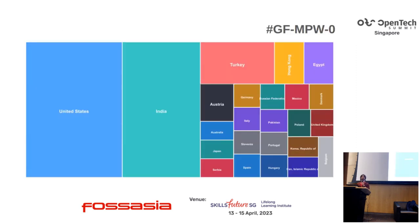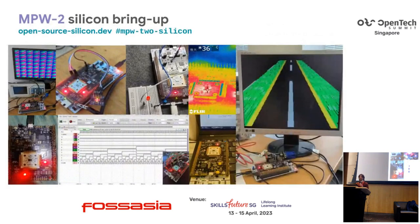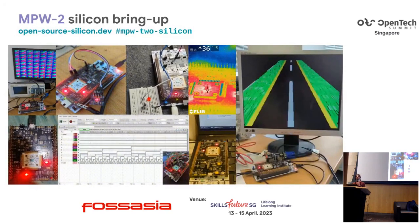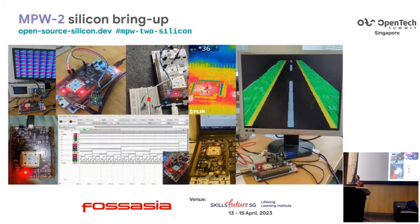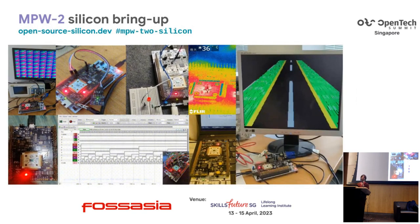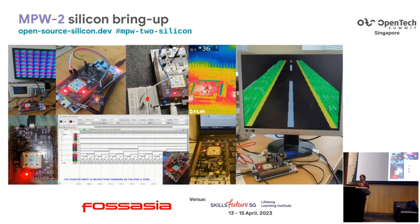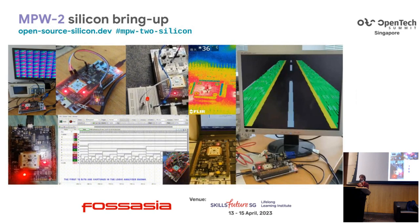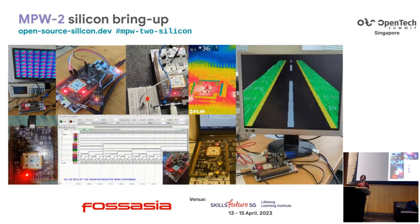We've seen engagement from all over the world on this program. Looking at the breakdown of projects by country for one of the latest runs, GF MPW0, it's not only the United States — there's been very good engagement from countries in APAC including Japan and India. Currently we're busy with the community bringing up the silicon for the second shuttle, MPW2, and people are posting results online as they validate their designs.